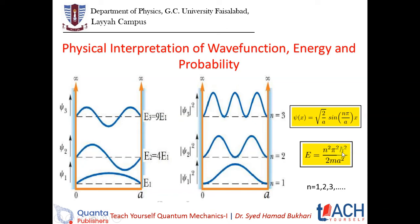Pi is a constant, h-bar (Planck's constant) is also constant, 2 is constant, m (mass of the particle) is constant, and a (width of the well) is also constant. So E1 will be a fixed value. We give this the name E1, and we draw its energy level slightly above zero on our diagram.